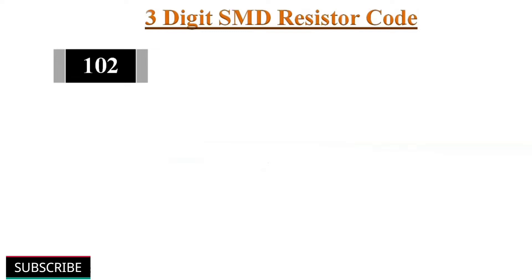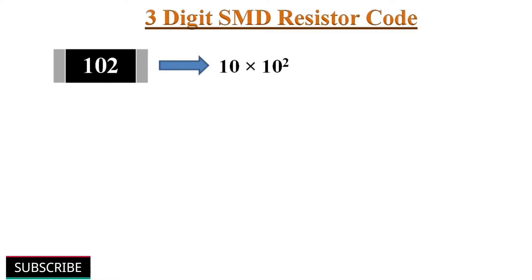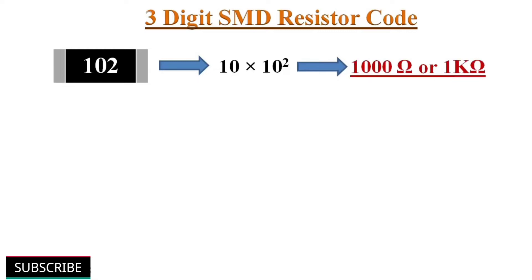For example, if the code written on the SMD resistor is 102, the first 2 digits 1 and 0 form the 2-digit number 10. The third digit is 2, meaning the multiplier is 10 to the power of 2. So the resistance value is 10 multiplied by 10 to the power of 2, which equals 1 kilo ohm.